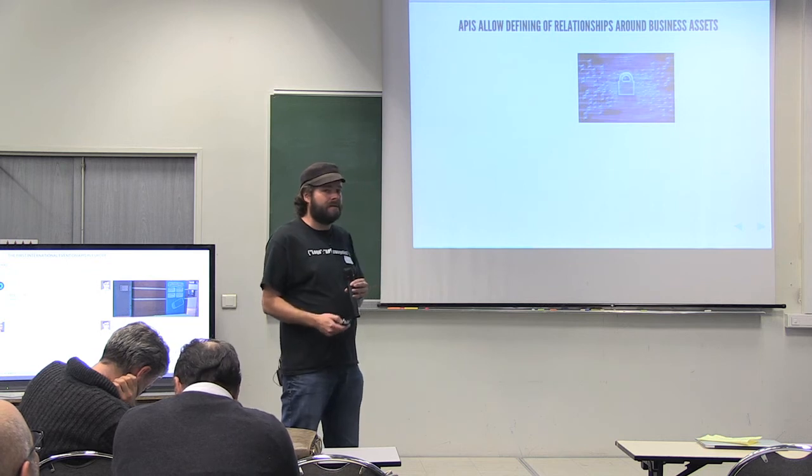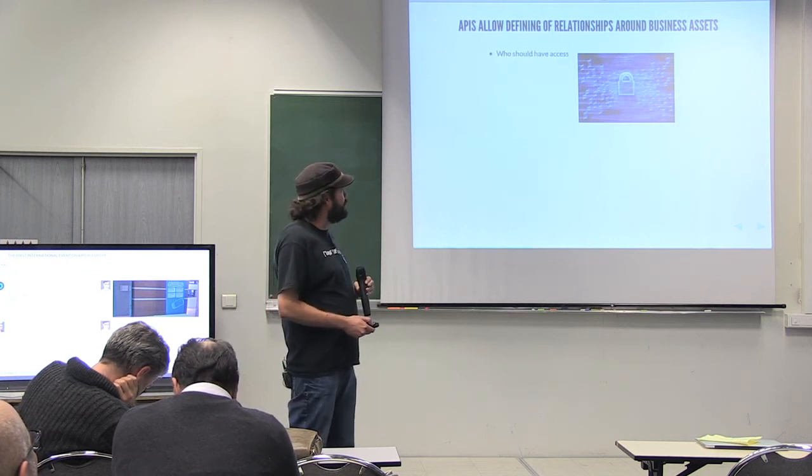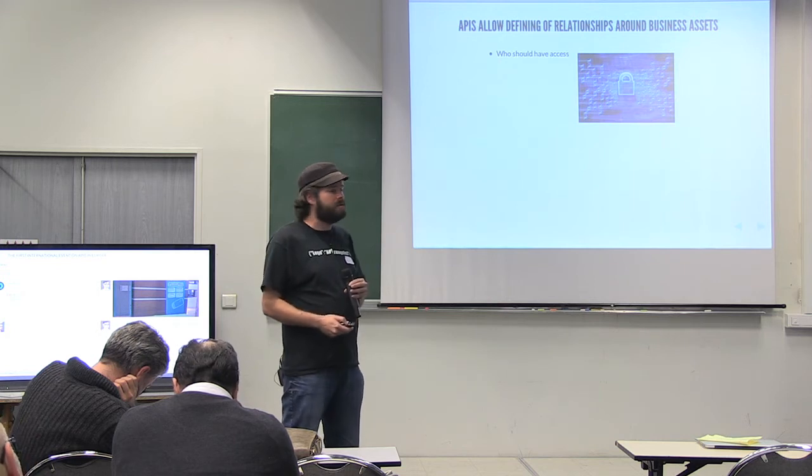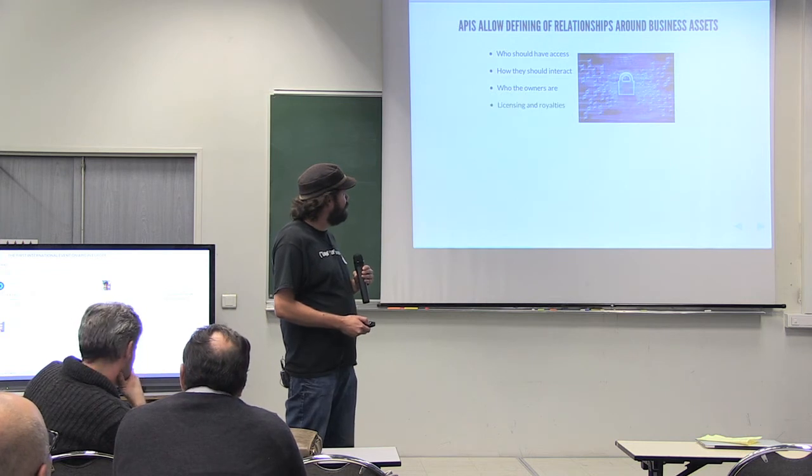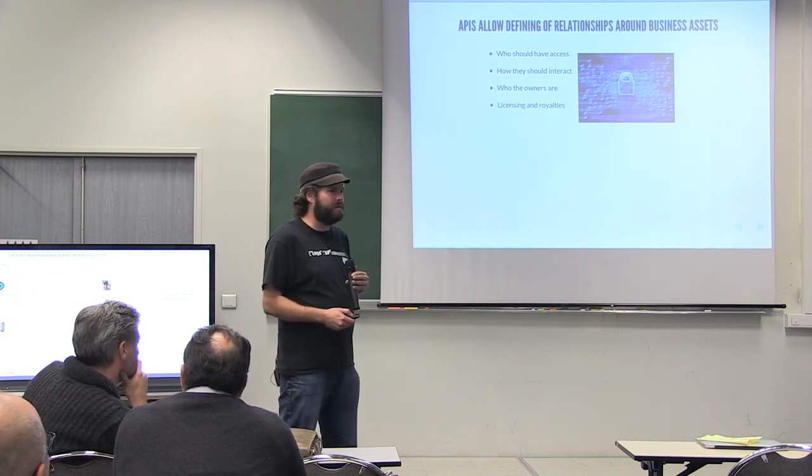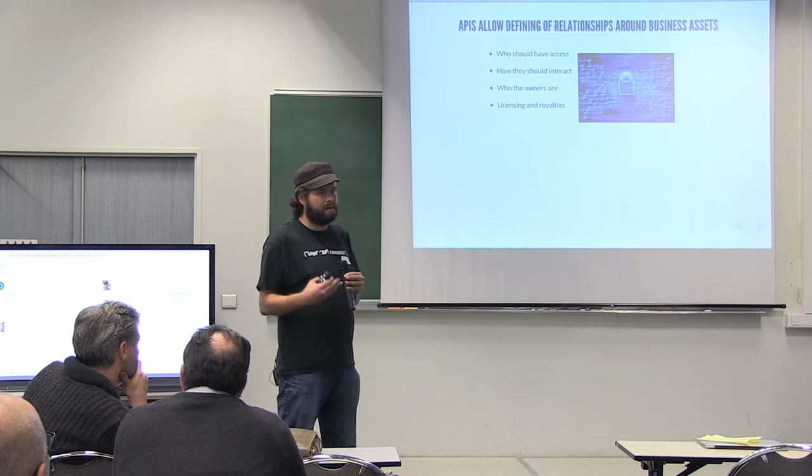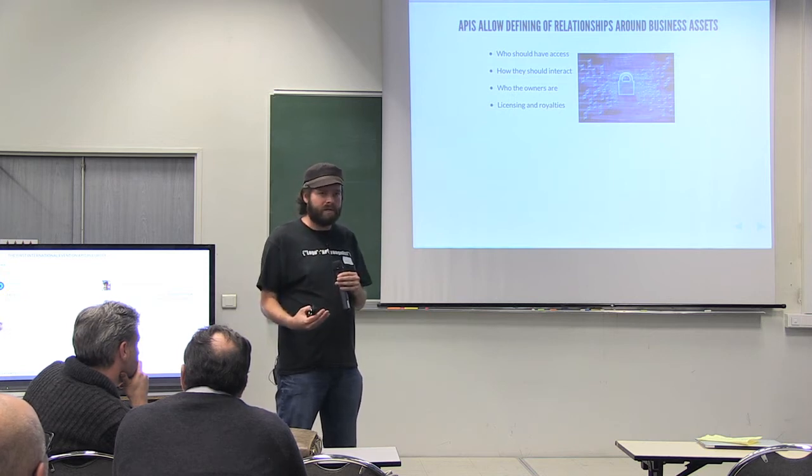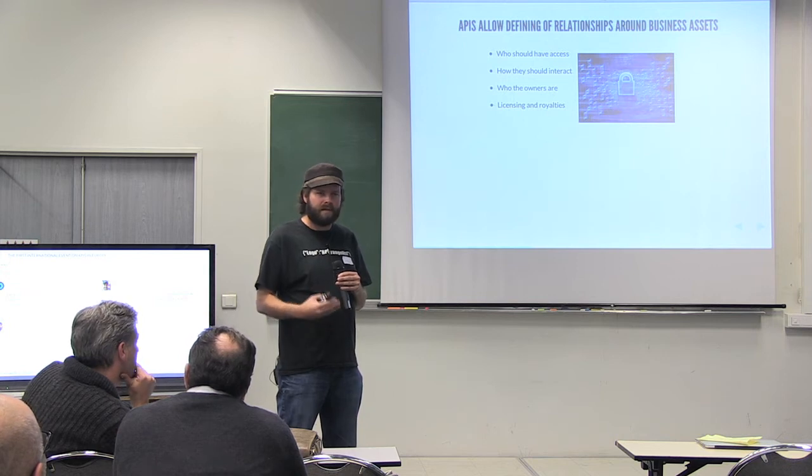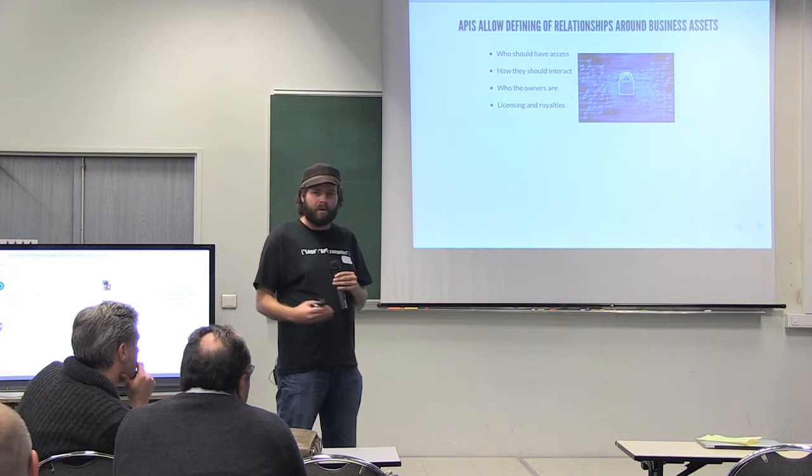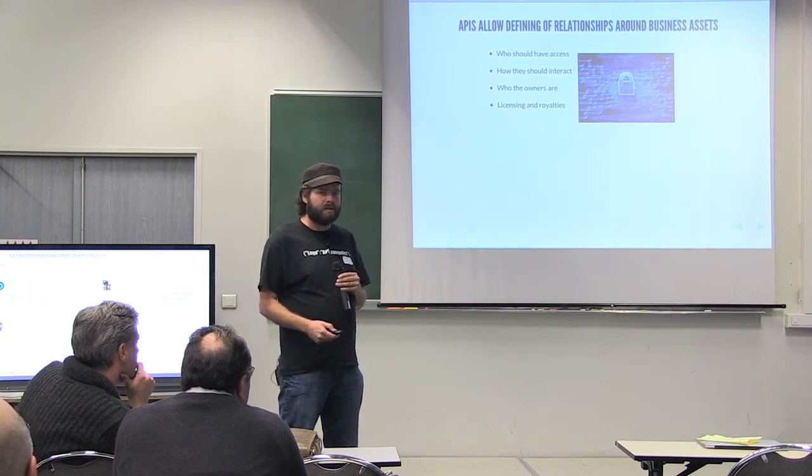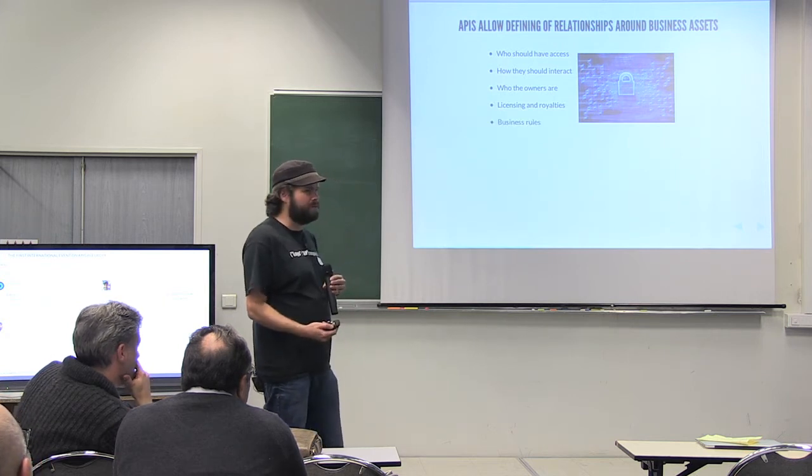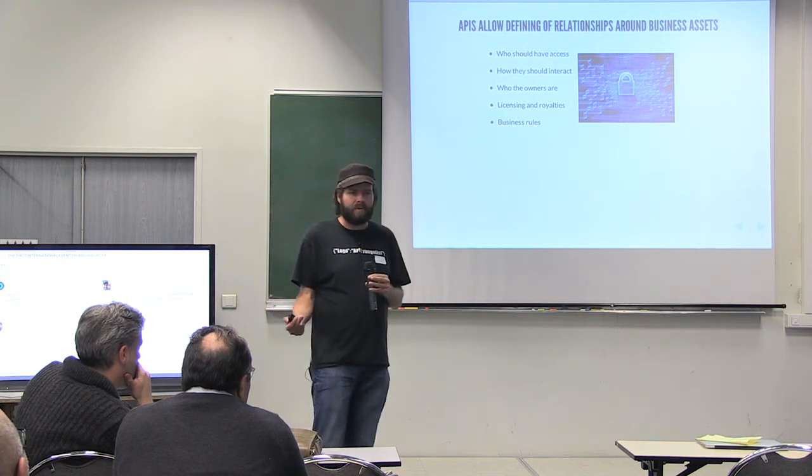The next step of that, that I feel is really healthy, is identifying the relationships around all of these assets. Who should have access? How should they interact? Who the owners are? What are the licensing and royalties? One of the things that companies get scared about is when they start exposing APIs, who owns this content? Where is it licensed? I think a lot of companies haven't been tracking on this. So they get really scared when they start opening up. They're worried about getting sued. So really understanding the owners and the relationships around this content is important. And what are the business rules? What are the rules for putting this stuff out there?